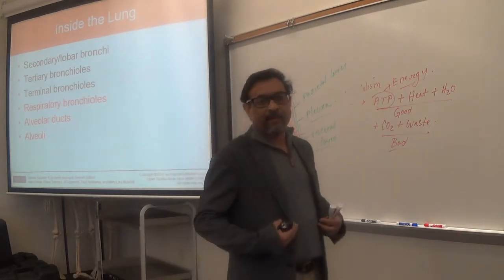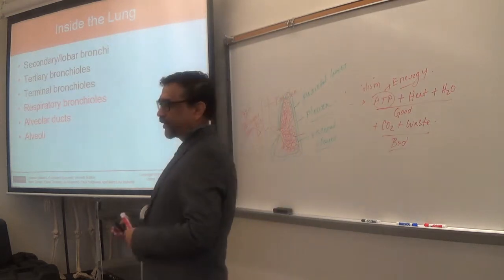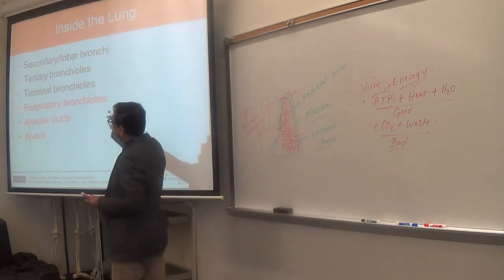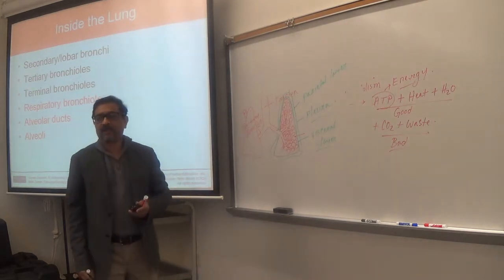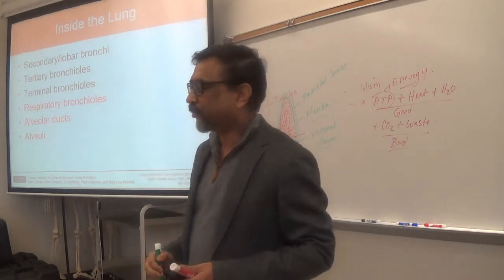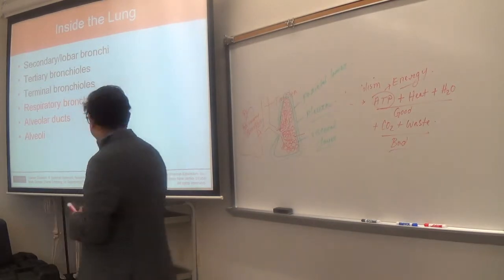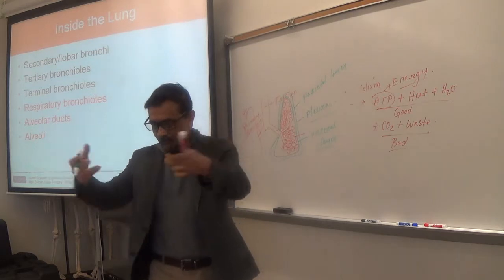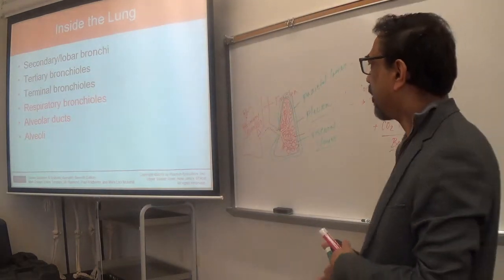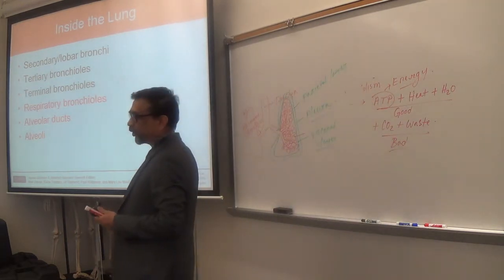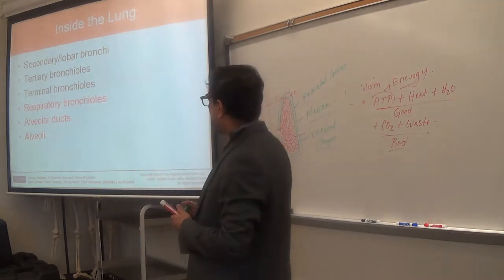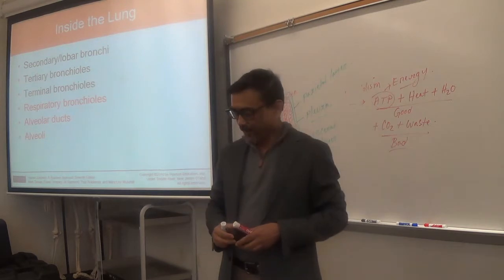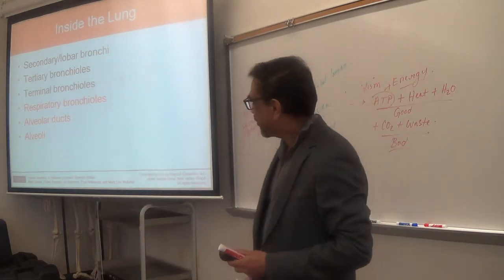Inside the lung, the primary or main bronchus divides again and again to form the bronchial tree — a tree-like structure. The branches inside the lung from larger to smaller are: secondary or lobar bronchi, then tertiary bronchi, then terminal bronchi, then respiratory bronchi, then alveolar ducts, and finally alveoli.